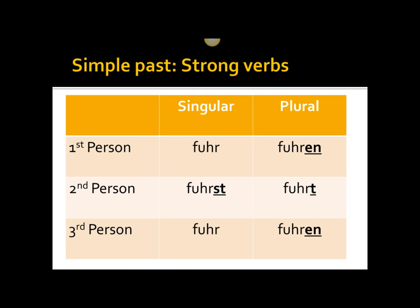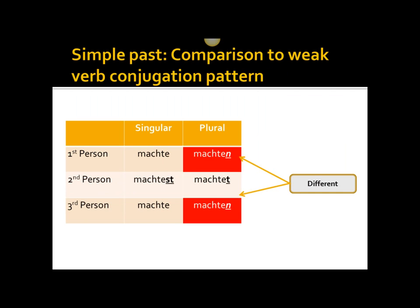You'll notice, if you look at the conjugation pattern, that it is slightly different than the irregular and weak conjugation patterns we have been looking at up to this time. Specifically, the difference is in the first person and third person plural. Whereas in the weak verb conjugation pattern we simply add an N in the first and third person plural, in strong verbs we have to add EN.